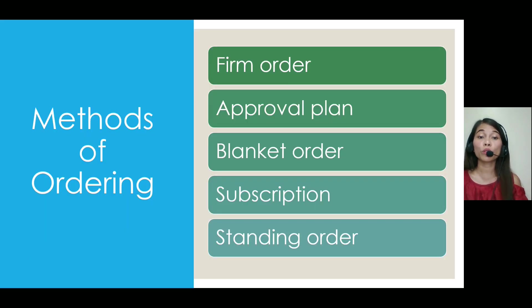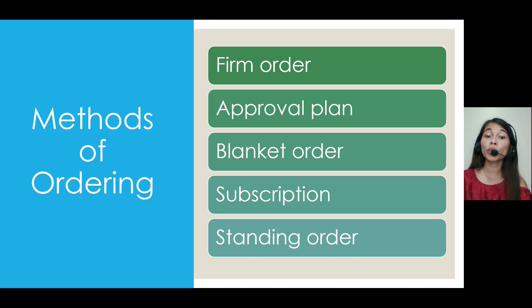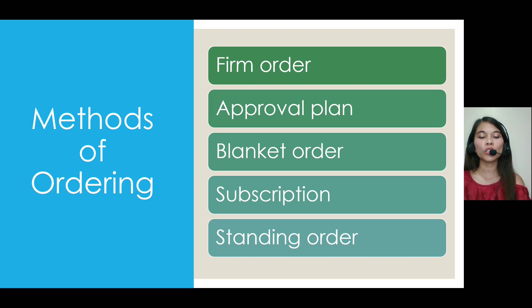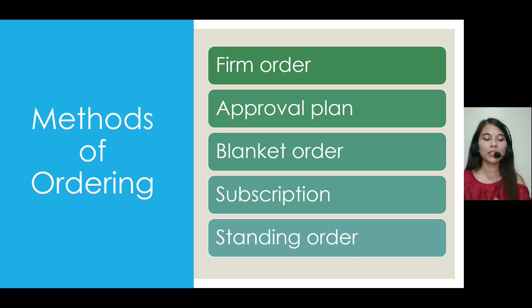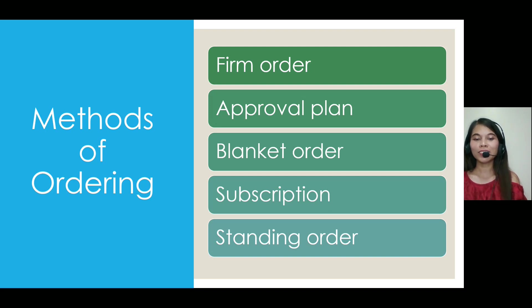We have several methods of ordering: firm order, approval plan, blanket order, subscription, and standing order. When we say firm order, it is used when the library knows exactly what it needs. Materials cannot normally be returned unless damaged or defective, and in this type of order there are limits on how much or how long.